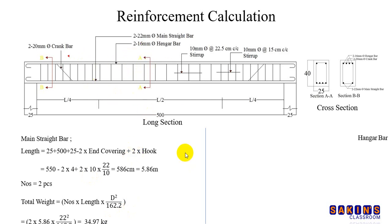Hanger bar: straight bar, 25cm plus 500cm plus 25cm minus 2 into end covering plus 2 into hook. Hook 10D is 16mm. Straight bar is 22mm. And 16mm is 16mm, 2 times 8mm.